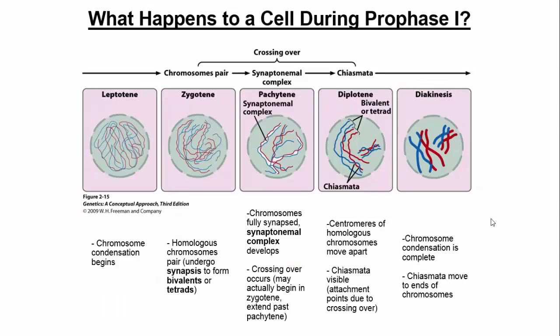In meiosis I, we start with a sub-stage called prophase I, which is divided further into tiny sub-stages: leptotene, zygotene, pachytene, diplotene, and diakinesis. To remember this, I use the mnemonic 'little zebra plays double deuces.' The weirder the mnemonic, the better it helps you remember. L is for leptotene — leptotene sounds like leopard, another animal. Z is for zygotene. P is for pachytene.